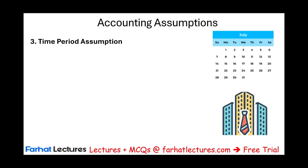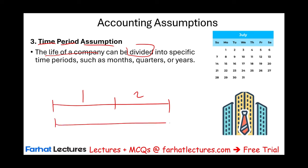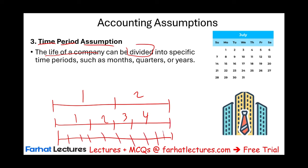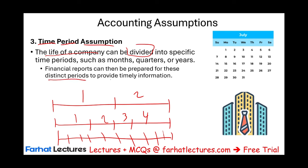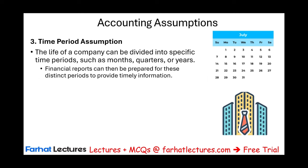Another important assumption is the time period assumption. This states that the life of any company can be divided into specific time periods — semi-annually, quarterly, monthly, or any other defined period. Financial reports can then be prepared for these distinct periods to provide timely information. For example, publicly traded companies must report on a quarterly basis. Small businesses, like mom-and-pop shops, typically report yearly to prepare their taxes. Certain private companies report twice a year, while others want to see everything on a monthly basis. This is the time period assumption.